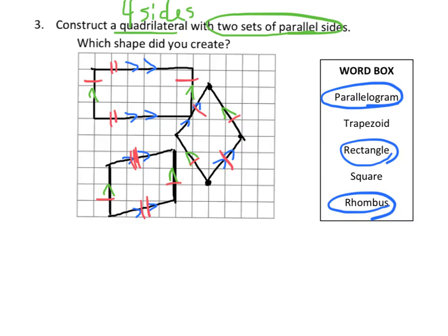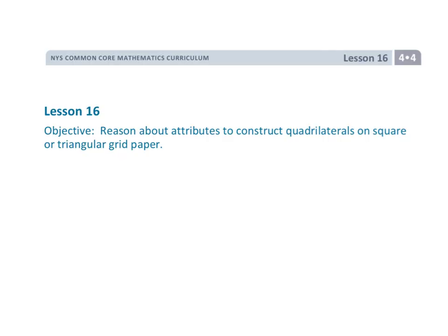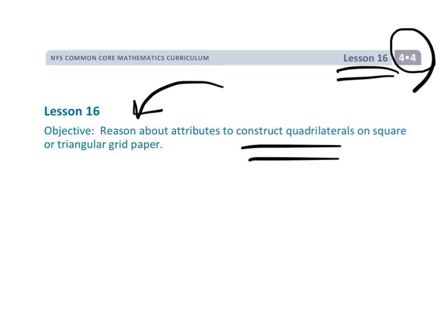I could also draw a square — I'll squeeze that in because it's so easy: boom, boom, boom, boom. There it is — there's a square. It's a quadrilateral and it's got two sets of parallel sides. So this question was really ripe, and we could have drawn any one of these four figures. That wraps up Grade 4, Module 4, Lesson 16, talking about quadrilaterals and reasoning about their attributes.